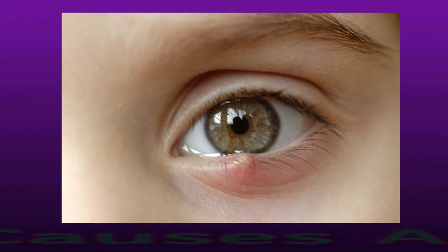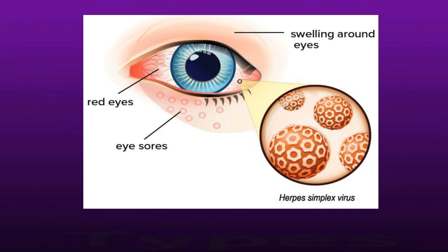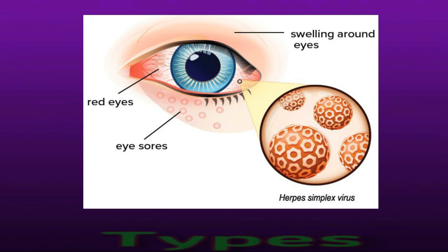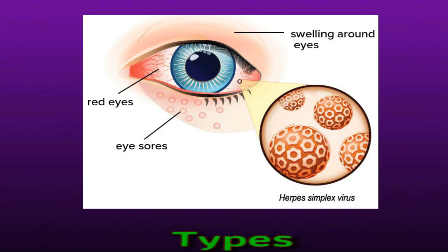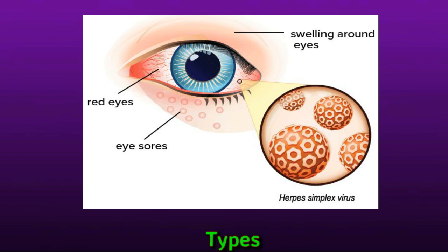There are two major types of herpes simplex virus. Herpes type 1, or HSV-1, commonly affects the face and is responsible for symptoms that include cold sores, which some people refer to as fever blisters. According to the American Academy of Ophthalmology, HSV-1 is more likely than HSV-2 to cause eye infections.